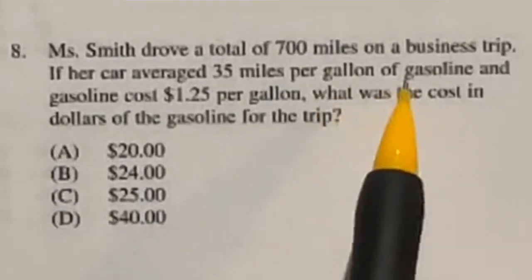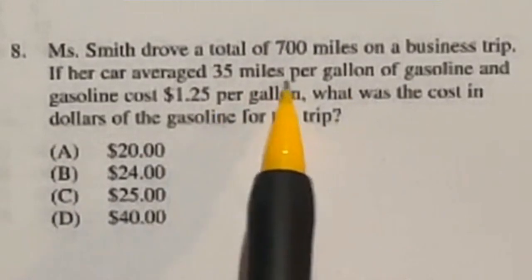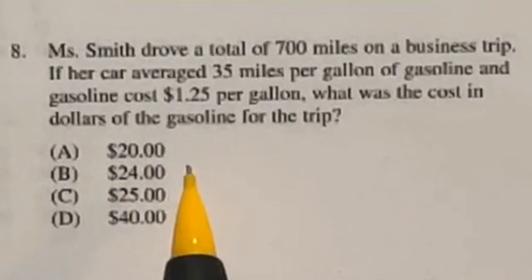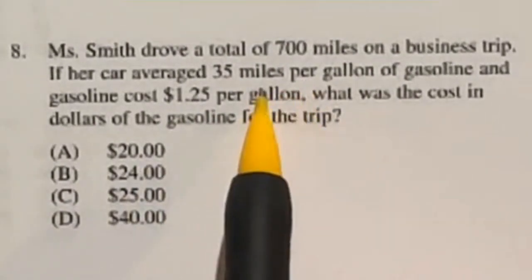Ms. Smith drove 700 miles for a business trip, averaged 35 miles per gallon. Gas is $1.25 per gallon. So how much money is going to be spent here? Well, first off, let's find out how many gallons were used. We're going to do the 700 divided by the 35.